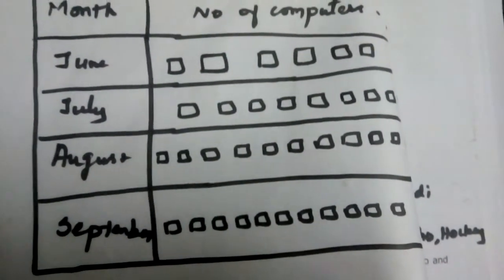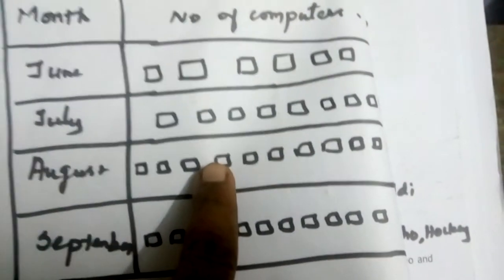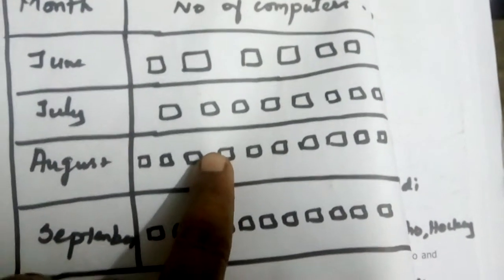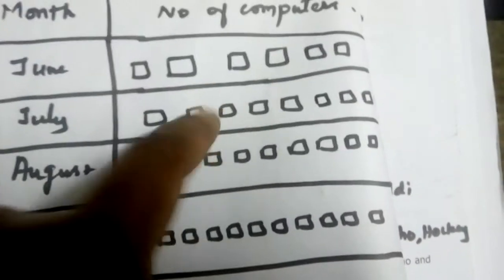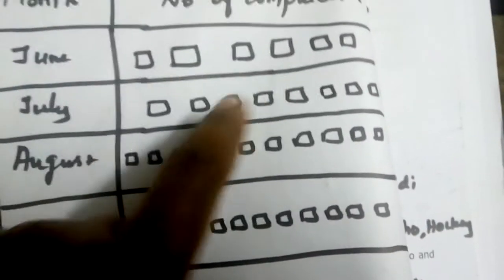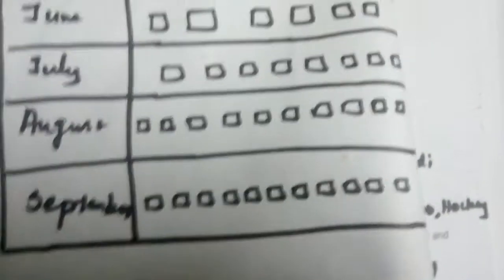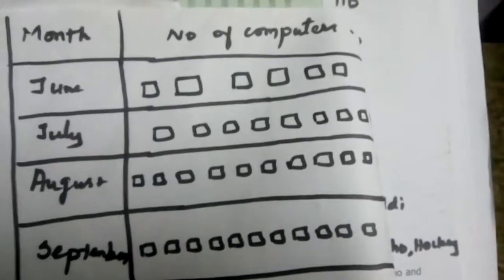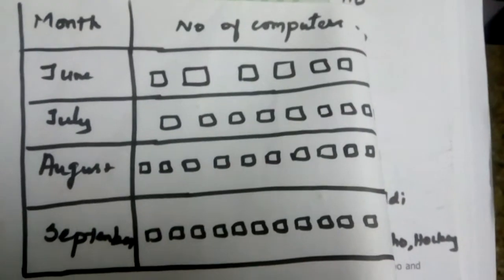You can draw any other related figures as well — it is your own choice. If it is a ball, draw a ball; if it is a circle, draw a circle. According to the data, we draw the appropriate pictures and show the data. This is called the pictograph.